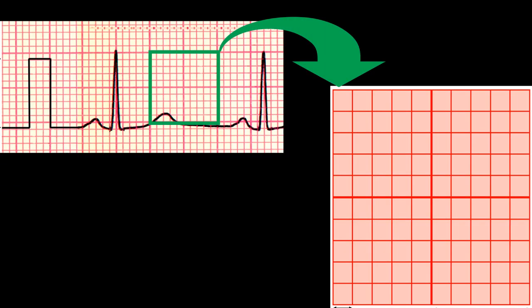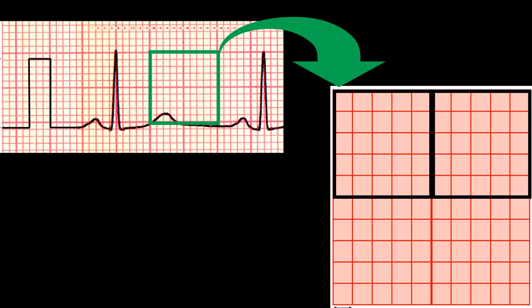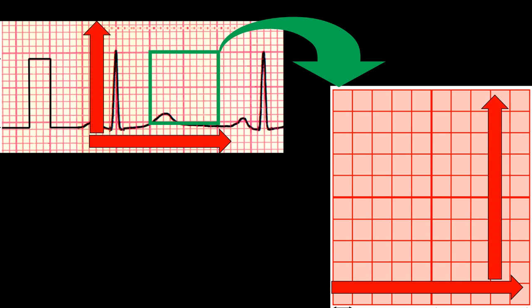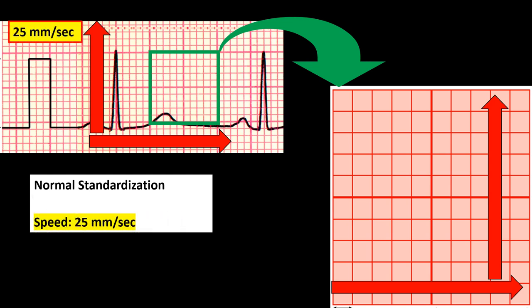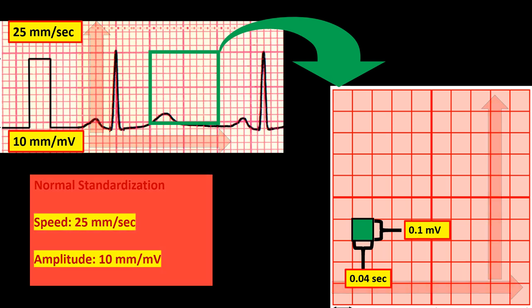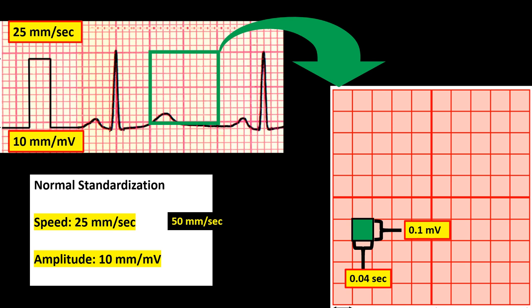This is an ECG tracing paper. You see small boxes measuring 1 by 1 millimeter, and big boxes containing 5 small boxes vertically and 5 small boxes horizontally. Looking at the boxes horizontally, it represents time. Looking at the boxes vertically, it represents amplitude. Normal standardization is a speed of 25 millimeters per second and amplitude of 10 millimeters per millivolt. Therefore, with normal standardization, 1 small box horizontally is equivalent to 0.04 seconds and 1 small box vertically is equivalent to 0.1 millivolt. Any changes from this normal standardization — like speed of 50 mm/s or amplitude of 20, 5, or 2.5 mm/mV — should be noted because it affects final ECG interpretation.